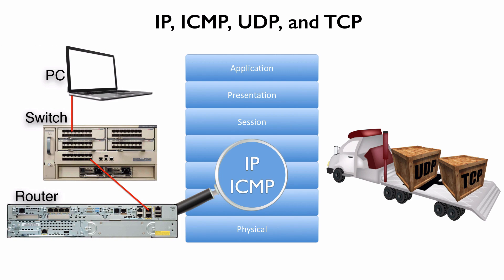Consider this basic topology. We've got a PC connected into a switch. A basic ethernet switch is a layer 2 device — it makes forwarding decisions based on physical addressing. Inside of the PC, we have a network interface card with a physical address called a MAC address. That router, which is also connecting into the switch, has a MAC address on that port. The switch learns which MAC addresses are connected to which ports, and that's how it knows how to forward traffic.